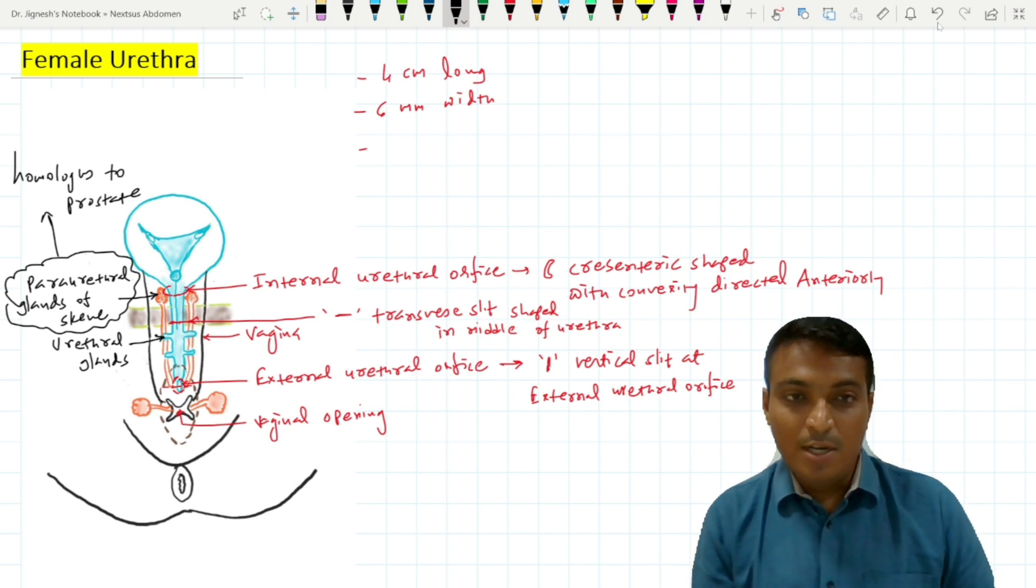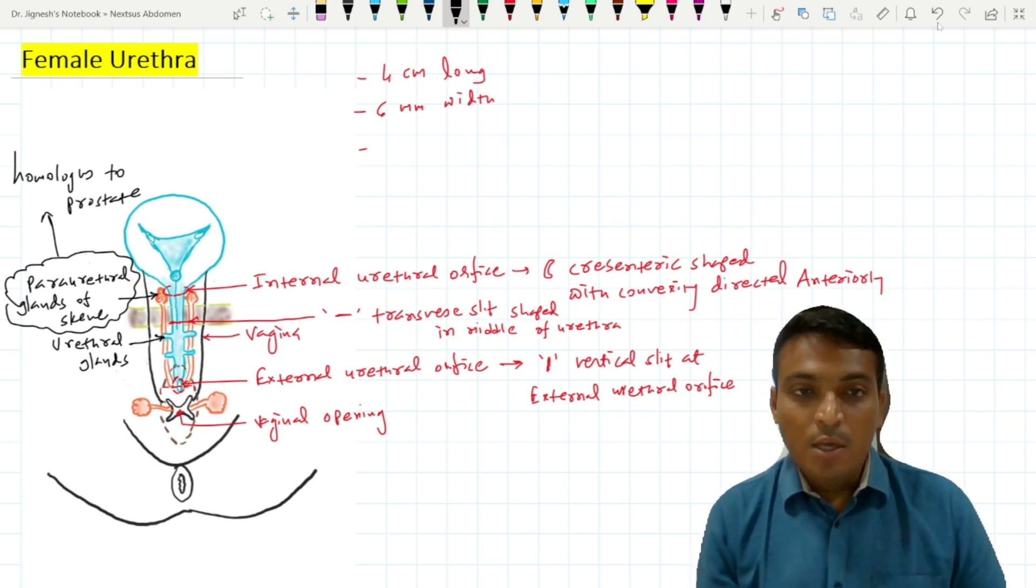The paraurethral glands of Skene travel down and open into the urethra at the external urethral opening.